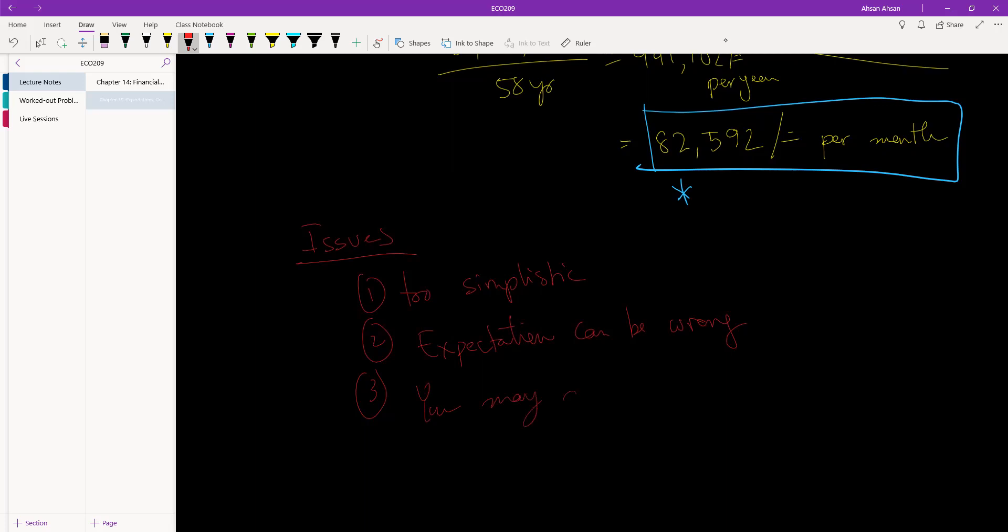You may not want constant consumption. So what this figure tells us, this 82,592, is that you can spend this much money every single month for the rest of your life. But you may not want to do that. You may want to save so that you have more money left over for later on and live more carefully right now. So that's another problem.